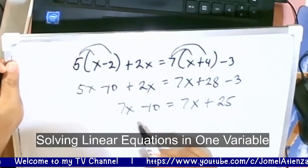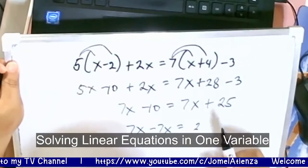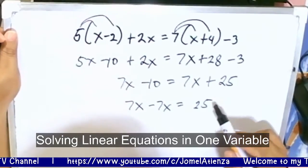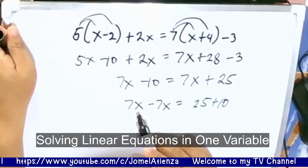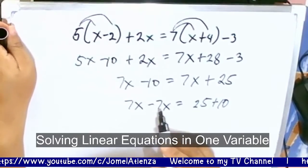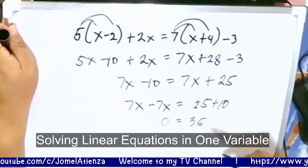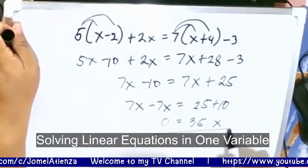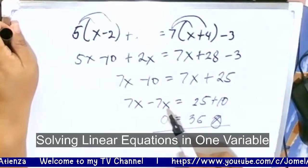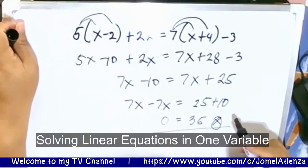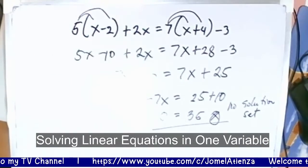Combining similar terms: we have 7x minus 10 on the left equals 7x minus 10 on the right. Transposing, 7x minus 7x equals 0, and we get 0 equals 0 — or rather 0x equals 35. Wait — this means there is no solution set. This is not an example of a linear equation with a unique solution; we have no solution set.